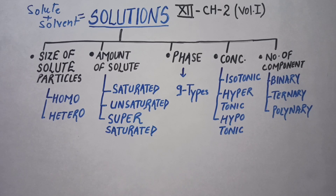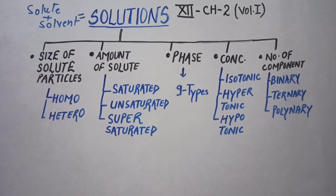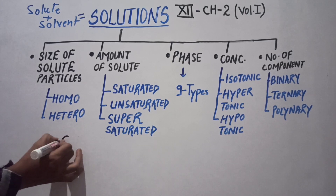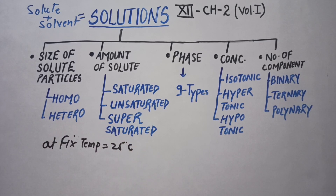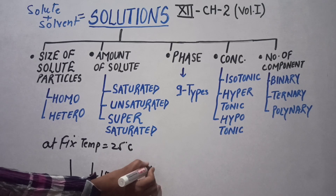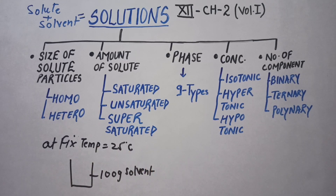The second classification is according to amount of solute, categorized into three: saturated, unsaturated, and supersaturated solution. In a saturated solution, at a fixed temperature — say 25 degrees Celsius — for 100 grams of solvent, the maximum amount of solute you are able to dissolve gives the saturated solution. After that, any additional solute will remain as solid and settle at the bottom of the beaker.